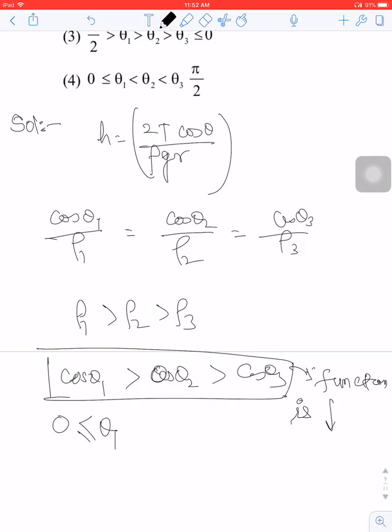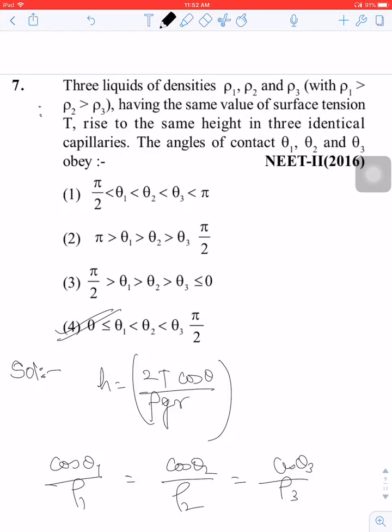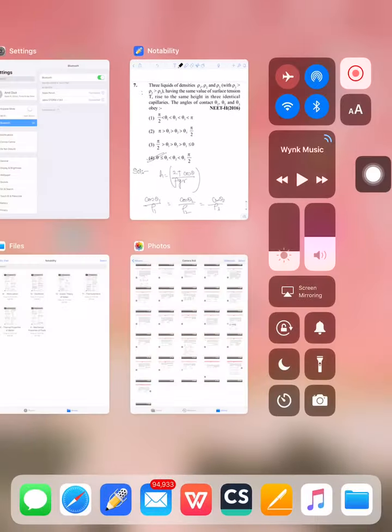So theta 1 is less than theta 2, less than theta 3, and less than pi by 2. The answer of option 4 is correct, and option 2 is also correct based on the theta relationships.